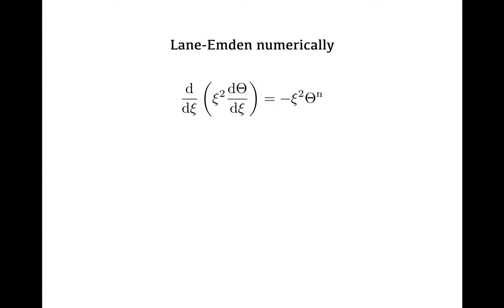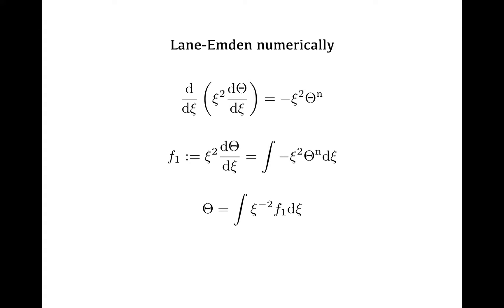Let's start by looking at the Lane-Emden equation. There are two derivatives in this equation, and we're going to solve one after the other. We define a function F1 that is simply the part in the brackets on the left-hand side, which is equal to an integral of the right-hand side of the Lane-Emden equation. By doing this we can determine F1, the content of the bracket, and then inside this bracket is another derivative, so we have to integrate once more to finally get the function theta.